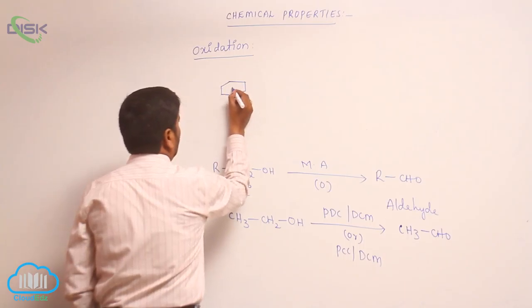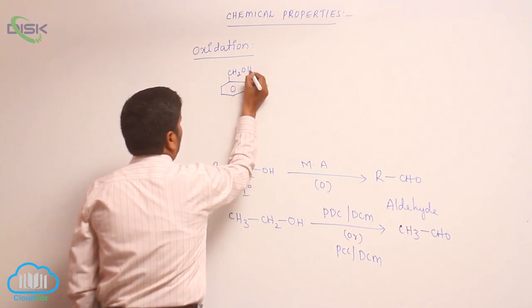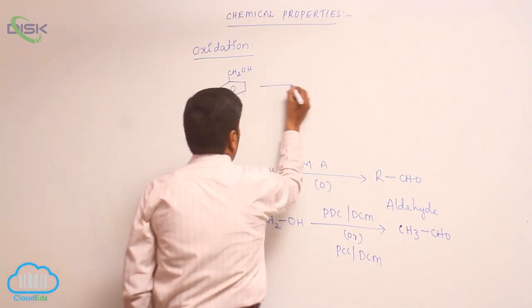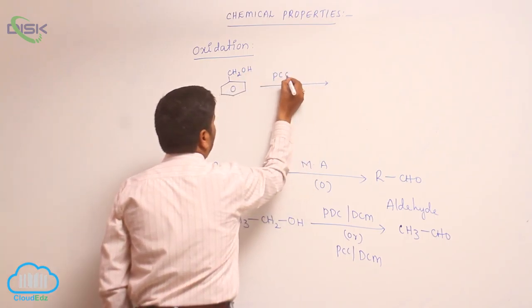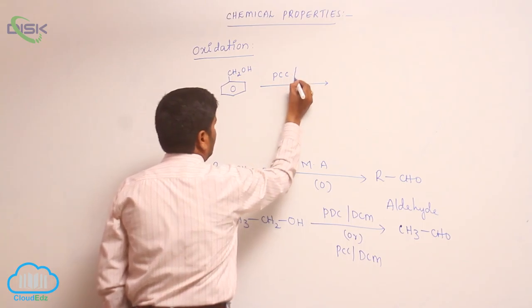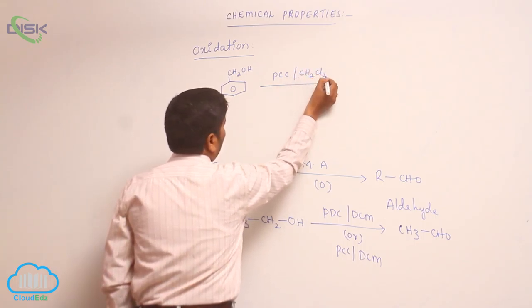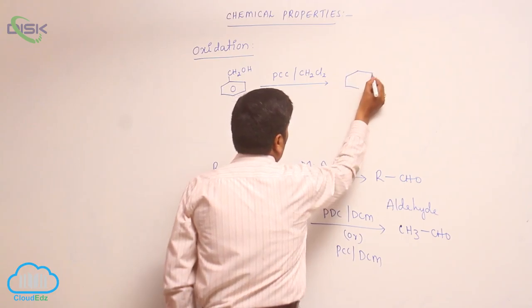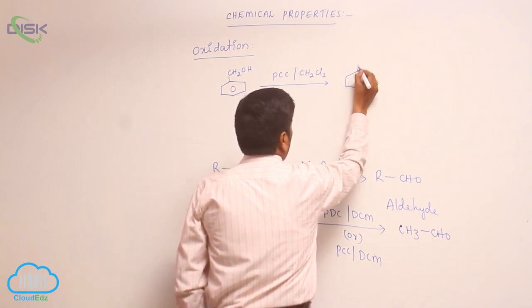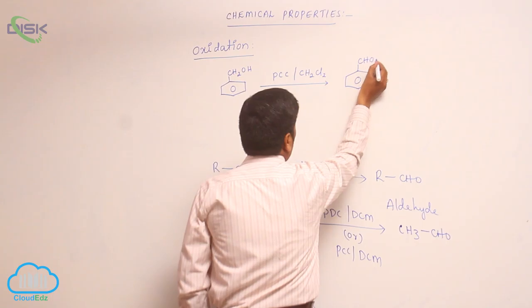Benzyl alcohol reacts with PCC in the presence of dichloromethane, and it converts into benzaldehyde.